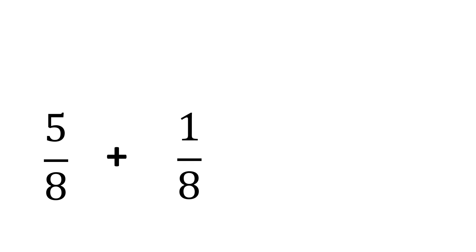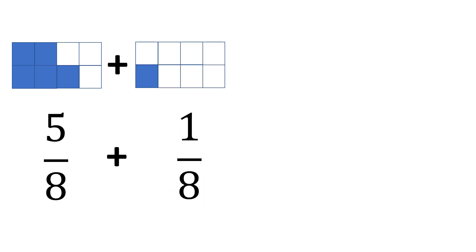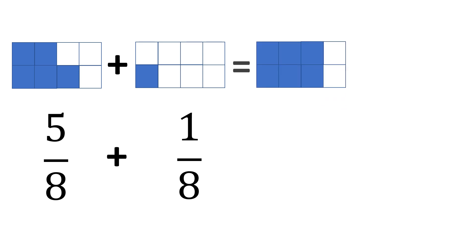Another example: 5 eighths plus 1 eighth. Let us visualize these fractions first. We have 5 shaded parts out of 8 — that is 5 eighths — plus 1 shaded part out of 8, which is 1 eighth. Combining these two gives 6 shaded parts out of 8. The expected result is 6 eighths. To solve: copy the common denominator, 8, and add the numerators — 5 plus 1 is 6, or 6 eighths.